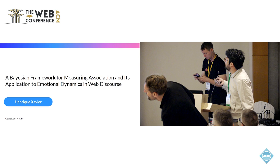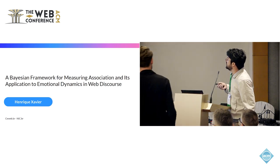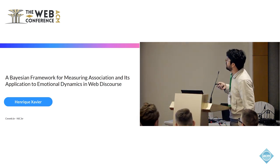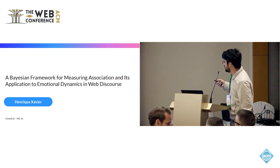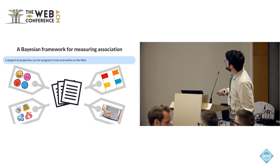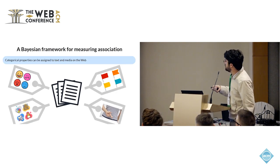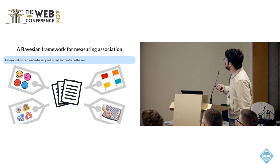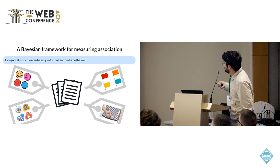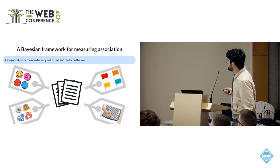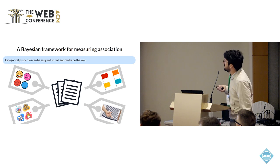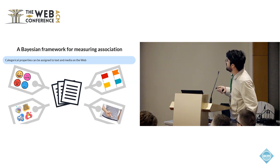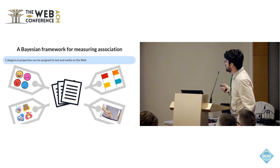This is a suggestion of how to measure association between categorical variables, which is something we do a lot when analyzing content on the web. For instance, you can have some text or media and assign a bunch of labels to it — emotions, political stances, topics, or whether it is misinformation or not. The idea is that you may be interested in knowing if two topics tend to appear together, or if one political stance is associated with misinformation.